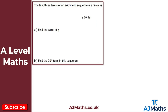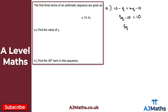For question two, the first three terms of an arithmetic sequence are given as q, 10, and 4q. For part a we're asked to find the value of q. Since the difference between consecutive terms is constant, we need: 10 − q = 4q − 10. Adding q to both sides: 5q − 10 = 10. Adding 10 to both sides: 5q = 20.